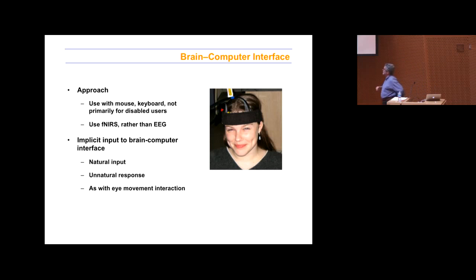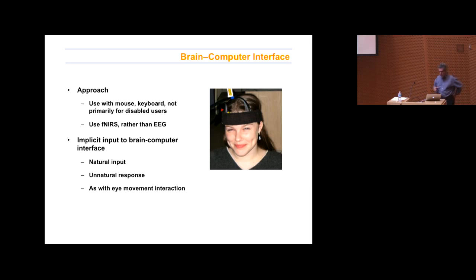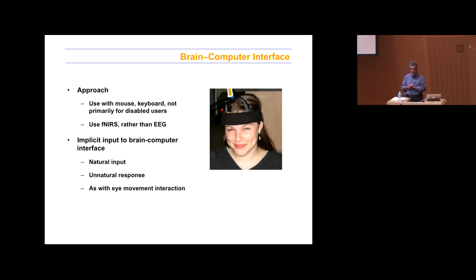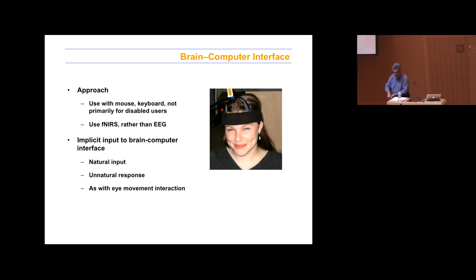We're using fNIRS — functional near-infrared spectroscopy — not because it's an especially good match, but because I have a collaborator at Tufts who's one of the pioneers in this field. This is a relatively recent technology. Ten years ago there were still papers being published asking whether it was really measuring the brain. Whereas EEG has been around 100 years. As a scientist, you want to dig somewhere they haven't already been digging for 100 years, and it may give us some new opportunities.